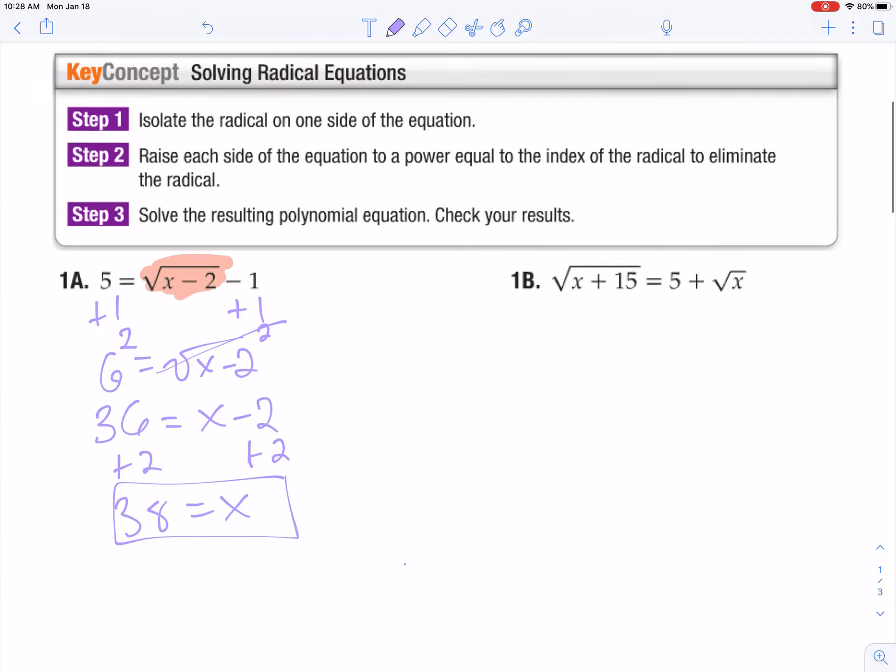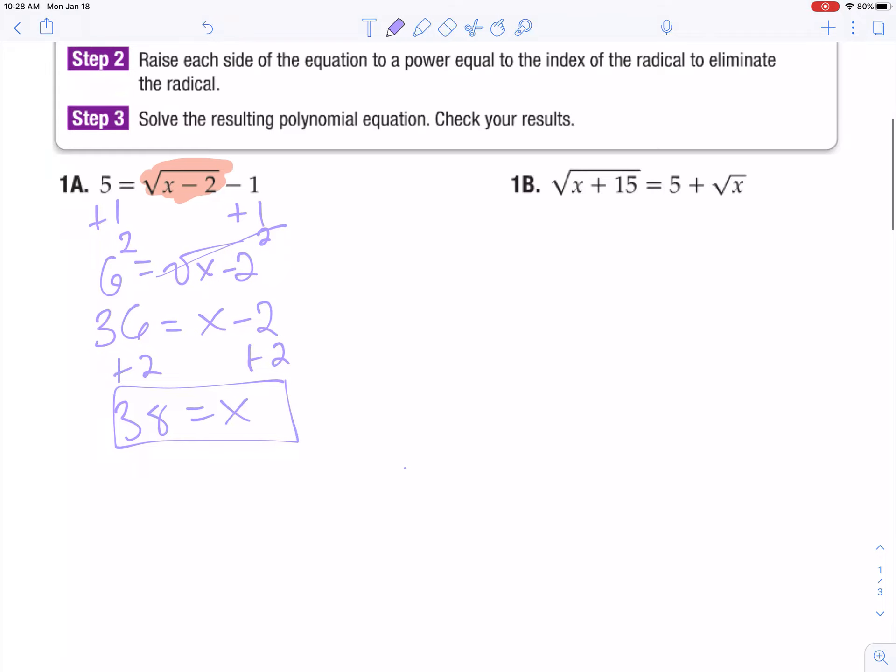Now, this is very important – you need to plug your answer back in and double check it works, because sometimes it will give you a negative number and that's not good. Not that negative numbers aren't good, but that you don't want a negative number underneath a radical sign.